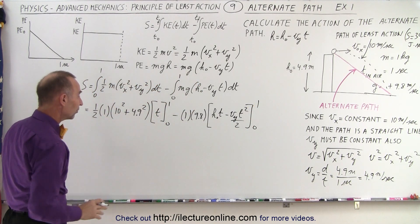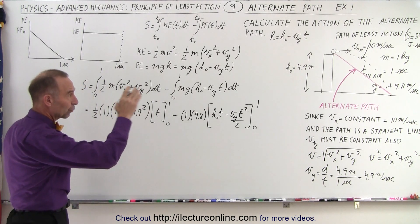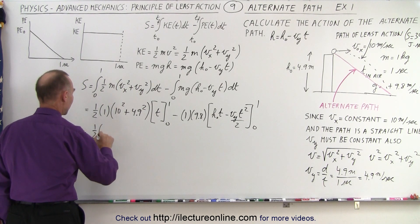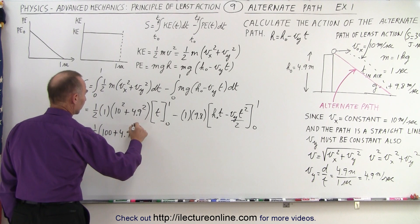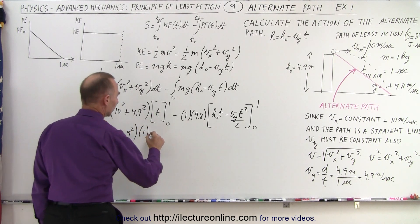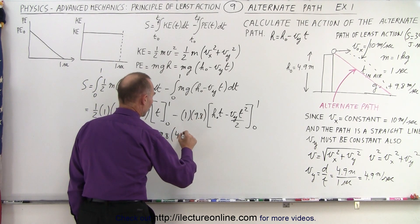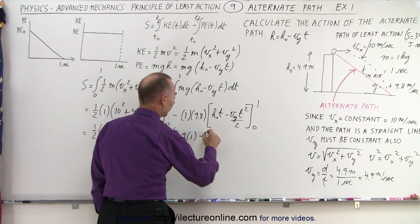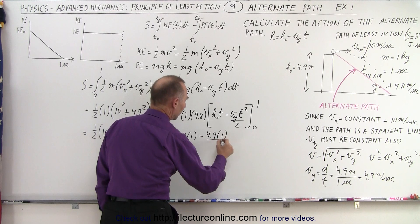Now we plug in the values and evaluate. The action equals one-half times (100 plus 4.9 squared) times 1, minus 9.8 times (4.9 times 1 minus 4.9 times 1 squared divided by 2).